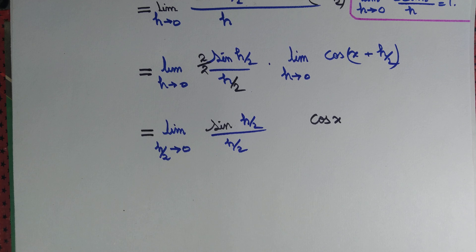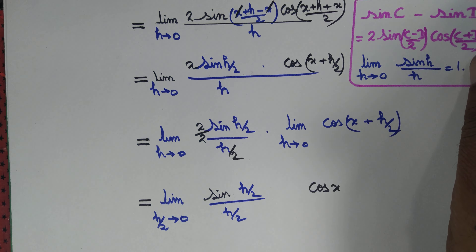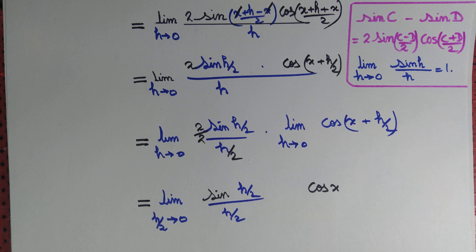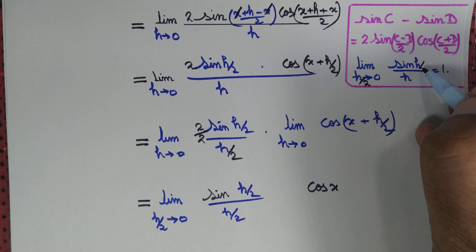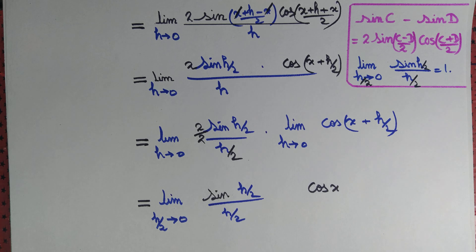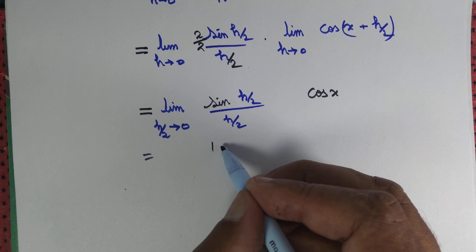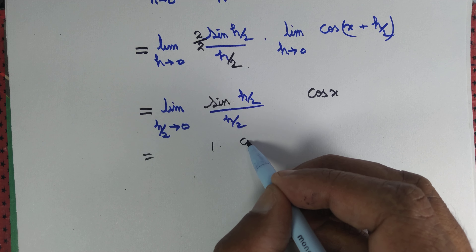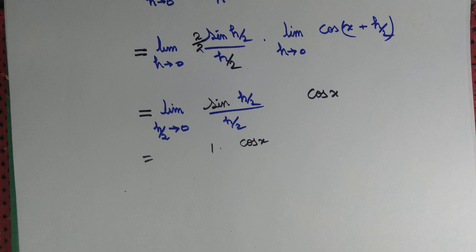Now, we know that the limit as h tends to 0 of sin(h)/h equals 1. So similarly, the limit as h/2 tends to 0 of sin(h/2) divided by (h/2) is also 1. Therefore, this limit is simply 1 times cos x, which equals cos x. The limit exists and equals cos x, so the derivative of sin x is cos x.